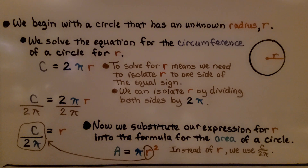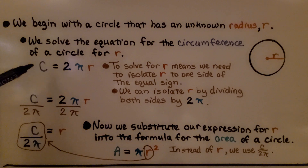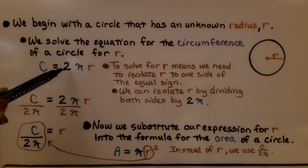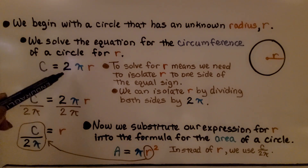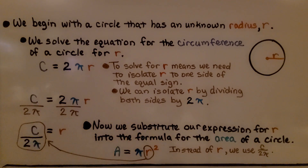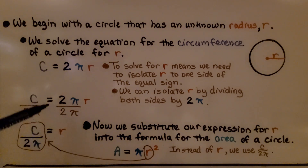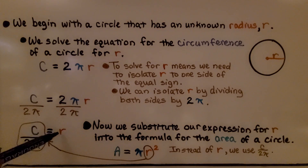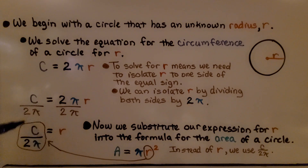We begin with a circle that has an unknown radius r. We solve the circumference formula for r. The formula is C = 2πr. To solve for r, we need to isolate r to one side of the equal sign. We can isolate r by dividing both sides by 2π. We get 2π over 2π, which equals 1, leaving r isolated on one side, and C divided by 2π on the other side.